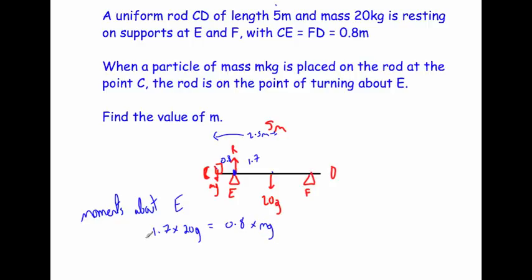Working this out: 1.7 × 20 × 9.8 = 333.2 newton metres. This equals the anti-clockwise moments: 0.8 × 9.8 × m = 7.84m. Dividing 333.2 by 7.84 gives m = 42.5 kilograms.